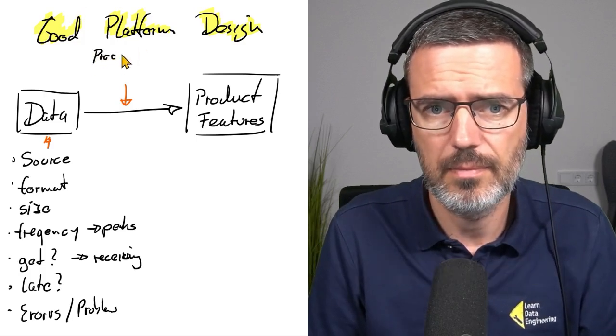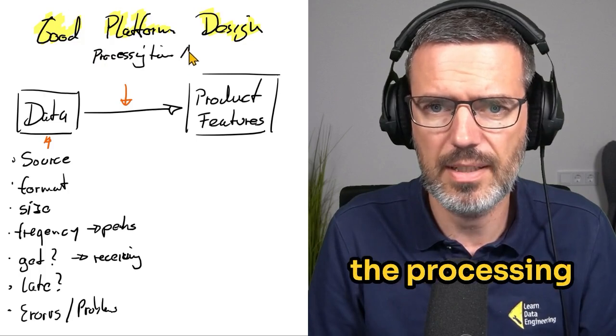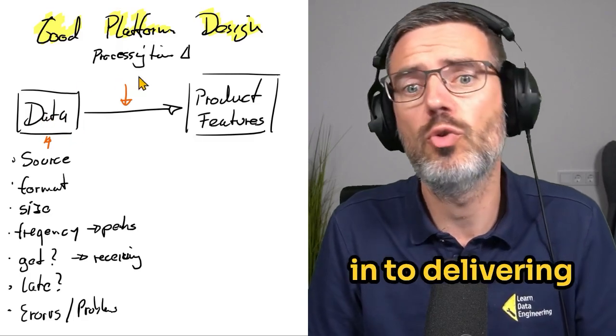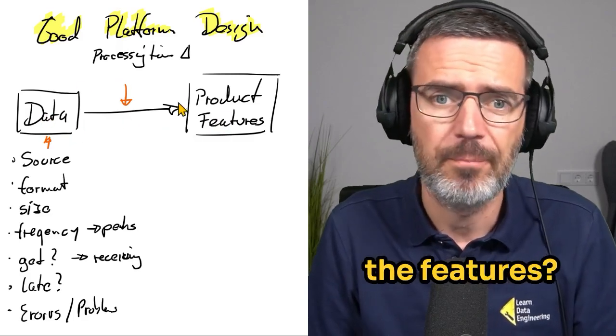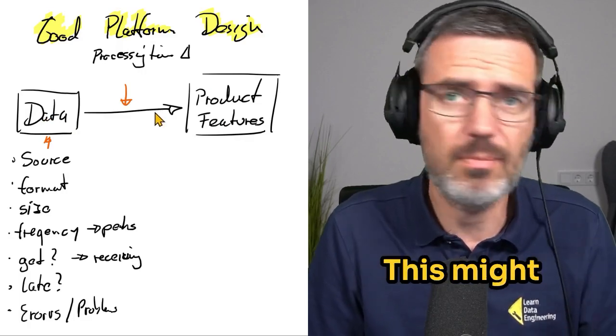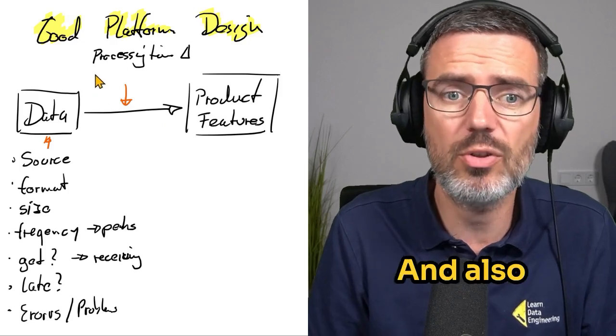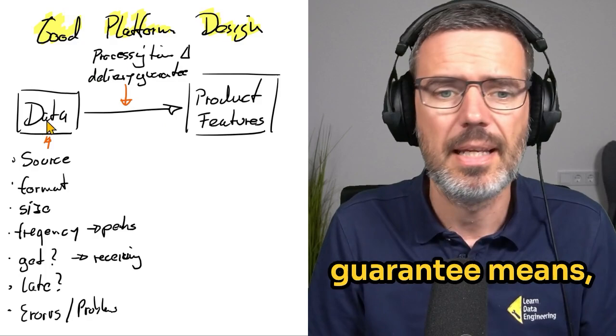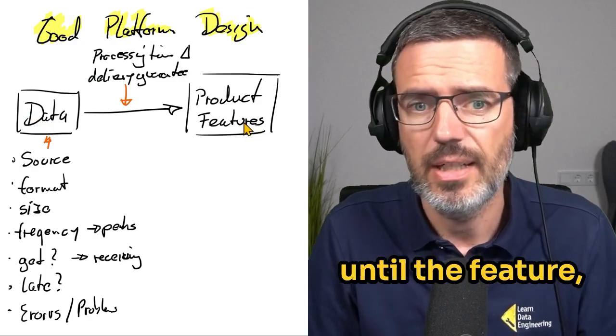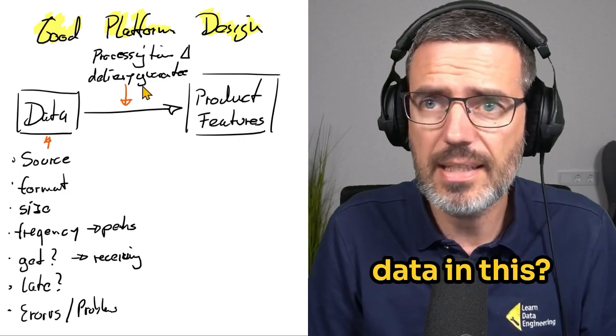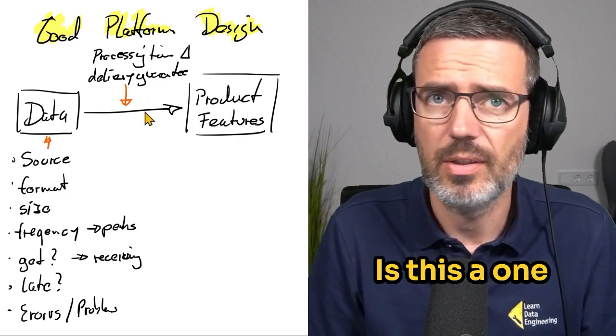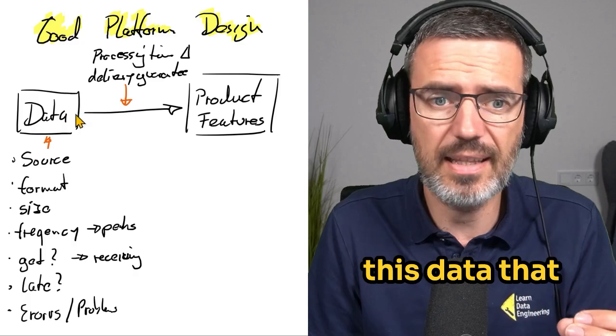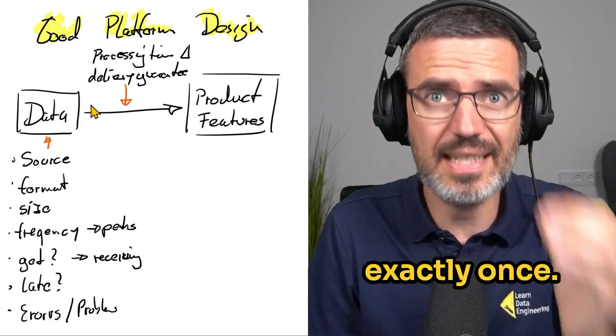Okay, my processing time. So basically the delta of the processing time. How long is it allowed from the data actually coming in to delivering the features? This might be a second, this might be a minute, it might be an hour. This is very important. And also the delivery guarantees. Delivery guarantee means when the data is coming in until the feature, can I lose some data in this? Is this a one-to-one thing? Can I process data multiple times? Or has this data that is coming in to be processed exactly once?